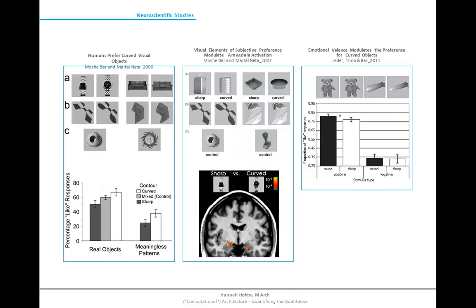Bar and Netta's 2006 study examined everyday objects with a neutral valence and found people preferred curved objects. Following that, they conducted an fMRI study to locate where in the brain activation occurred, hoping to understand why there is a preference for curves over sharp angles. They found that there was more activation in the amygdala — the fear response center of the brain, your fight-or-flight — when participants viewed sharp-angled objects.